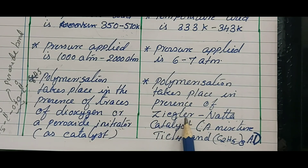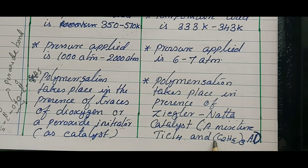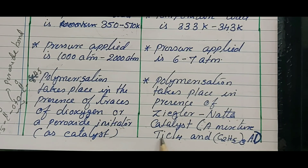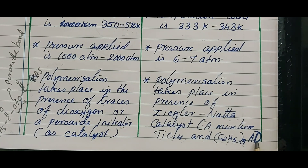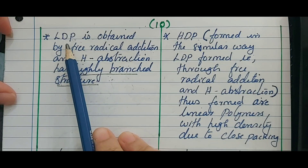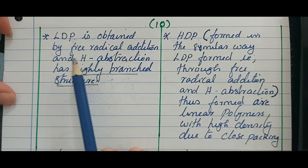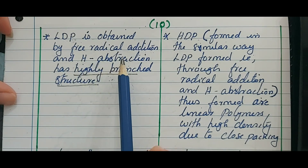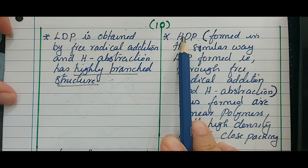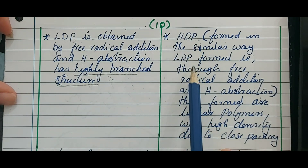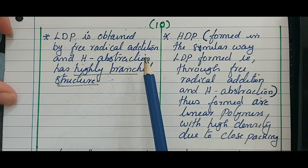For HDP, the catalyst used is the Ziegler-Natta catalyst, which is a mixture of titanium tetrachloride and triethyl aluminum. Both LDP and HDP are prepared by free radical addition and hydrogen abstraction.